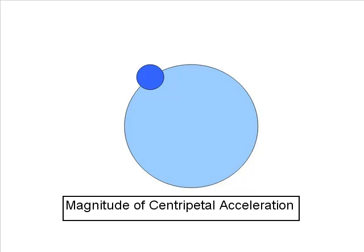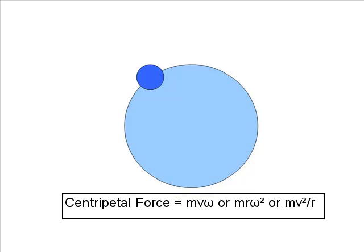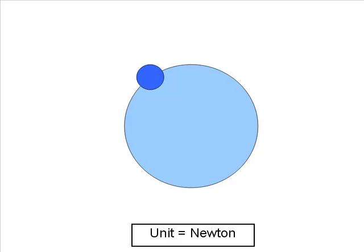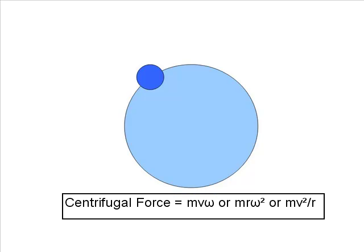The magnitude of centripetal acceleration is V omega, R omega square, or V square upon R. If we multiply this acceleration by mass, we get the force. Hence, the formulae for centripetal force are MV omega, or MR omega square, or MV square upon R. Its unit is Newton. Similarly, the centrifugal force, which is magnitude-wise the same but direction-wise opposite, is also given by MV omega, MR omega square, or MV square upon R, and its unit is also Newton.